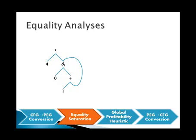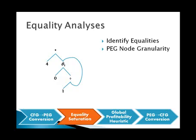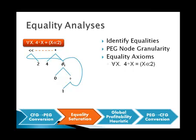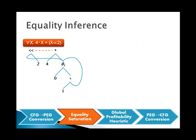Our version of traditional optimization is equality analysis. They have the simple job of identifying equalities within the IR. They can operate at the PEG node level, allowing them to reason about the equivalence of program components. They often take the form of equality axioms — for instance, multiplication by 4 is equivalent to left shift by 2. Applying the equality analysis produces an equality annotation edge, signifying that the multiplication by 4 produces the same value as the left shifting by 2. In traditional optimization, the destructive nature of program transformation would limit us to exploring the left shift by 2 path. However, we simply added information non-destructively, allowing us to continue exploring in the opposite direction.